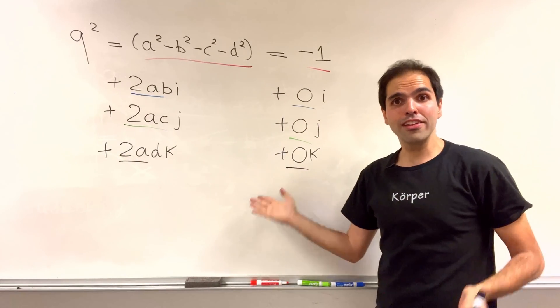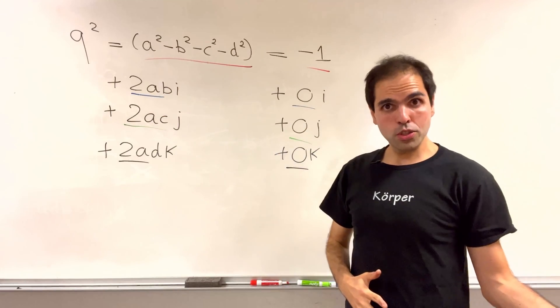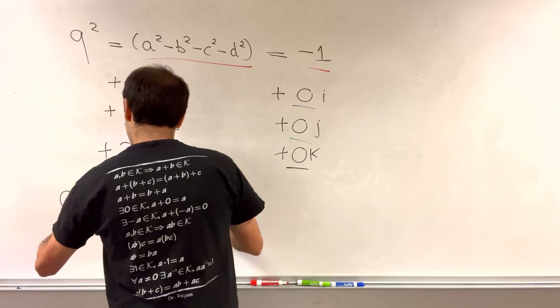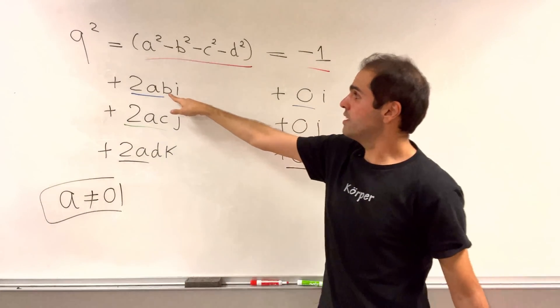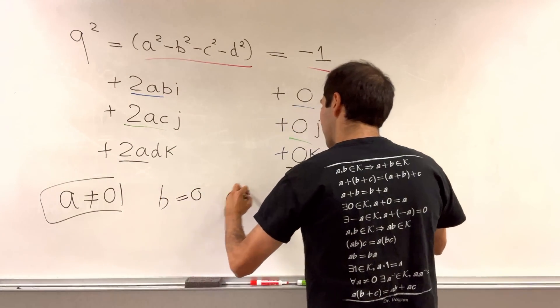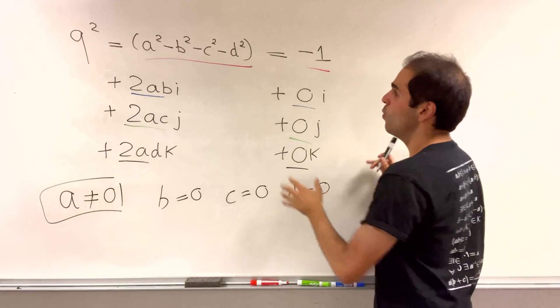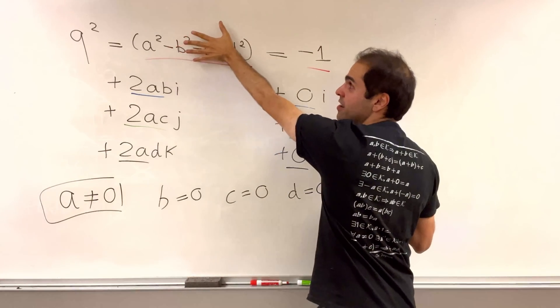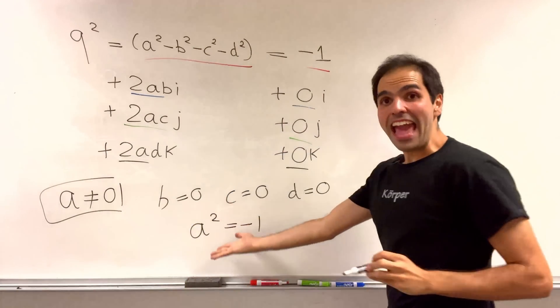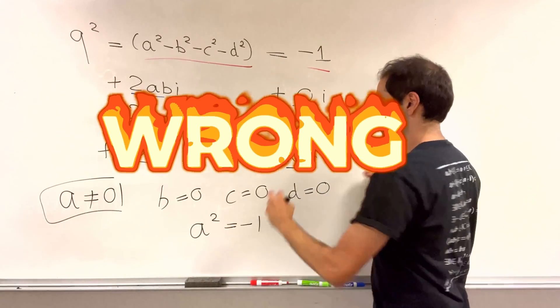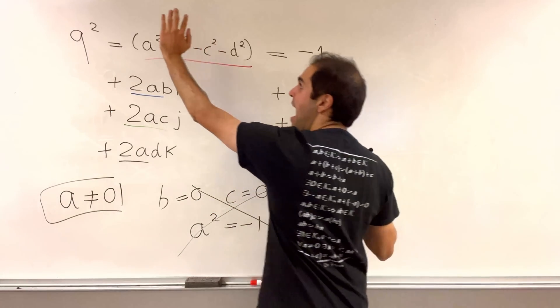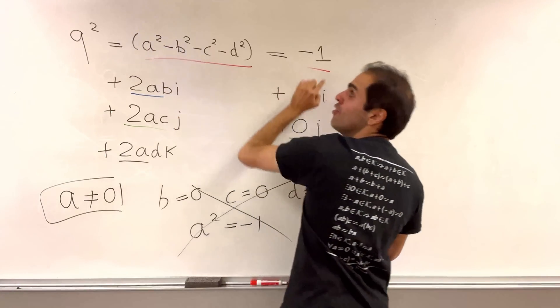And now we need to solve for this, which is not very hard, because there are two cases. Either a is non-zero. But then what this would mean, since ab is zero, it means b is zero, c is zero, and d is zero. But then what it means is that a squared minus zero, so a squared is minus one. But since a is real, this is wrong. So in other words, a cannot be zero, so a has to be zero, and then we get the following equation.